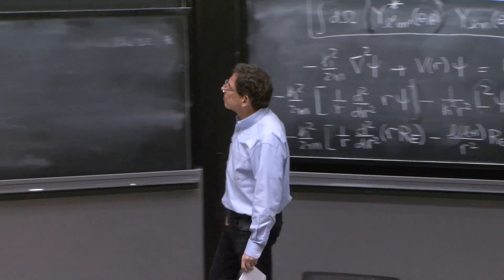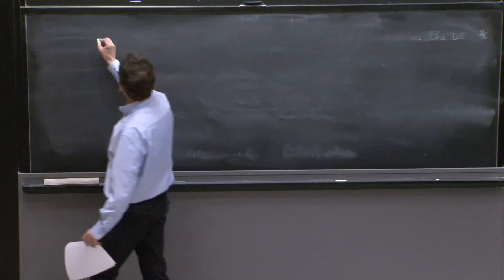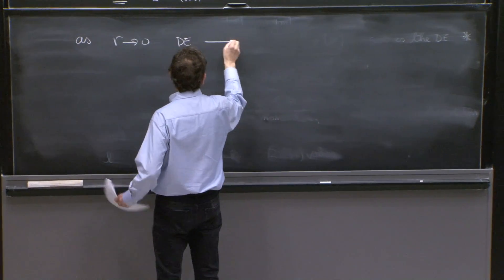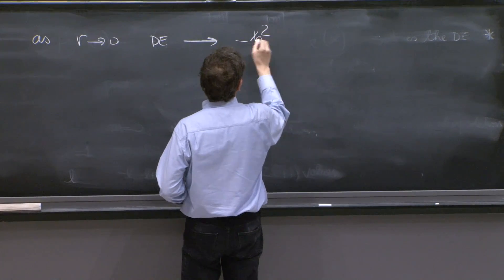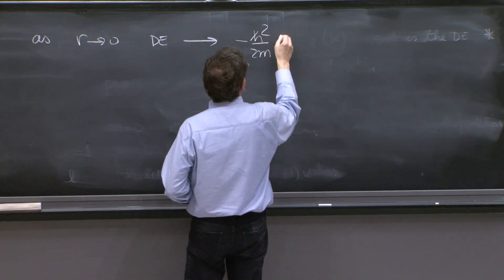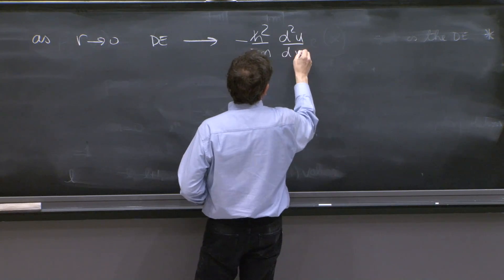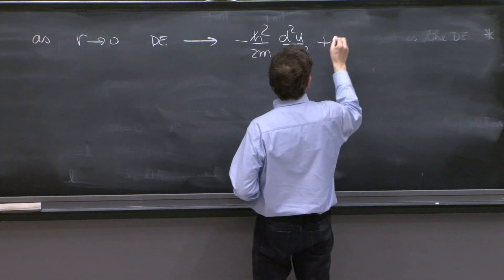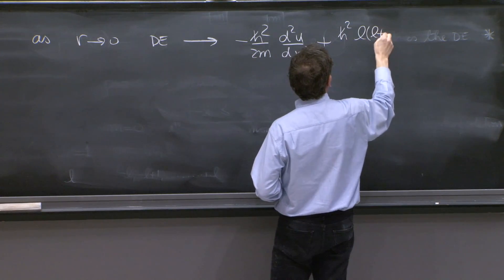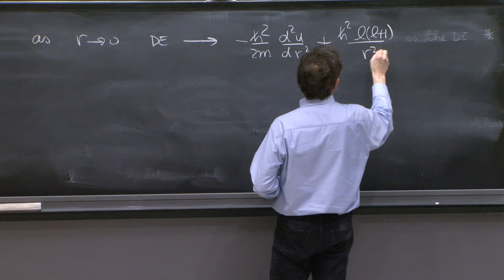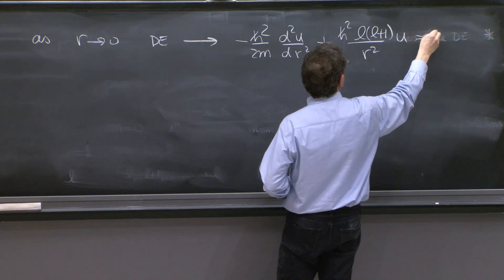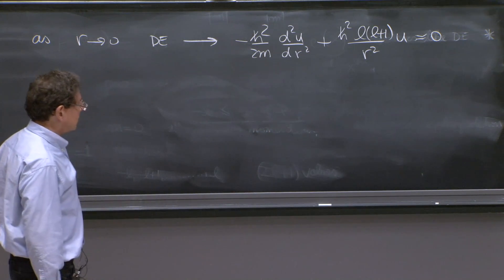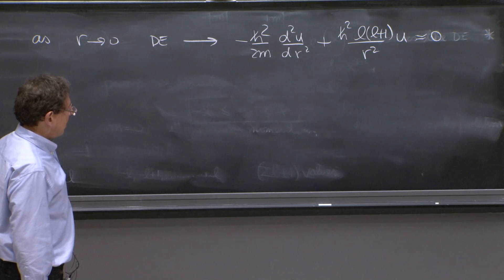has a potential infinite term which corresponds to the centrifugal barrier. So we think of this as r goes to 0, the differential equation roughly becomes -ℏ²/(2m) d²u/dr² plus ℏ² l(l+1)/(2mr²) u, roughly 0.